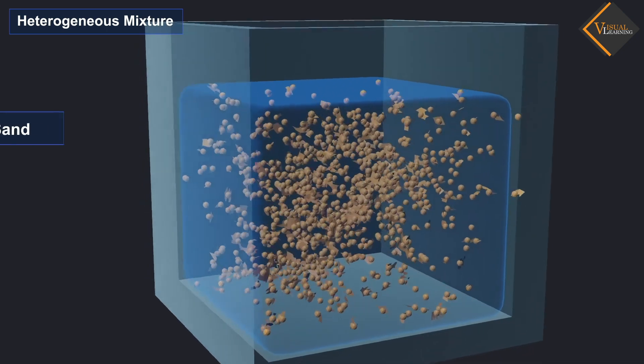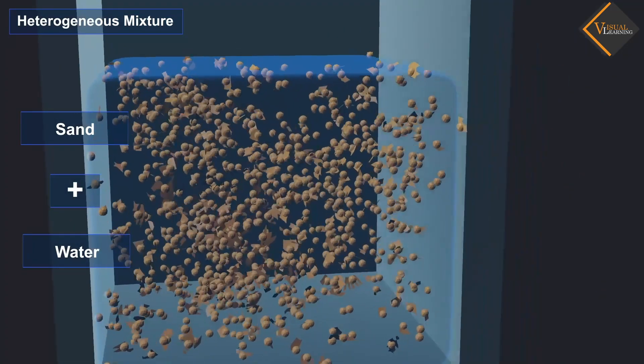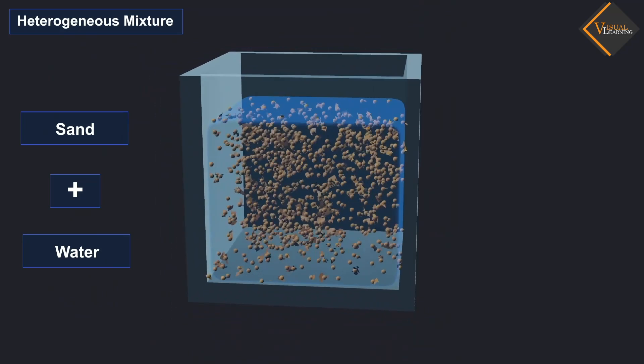For example, sand and water is an example of a heterogeneous mixture as sand does not distribute uniformly in water.